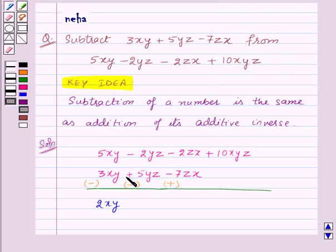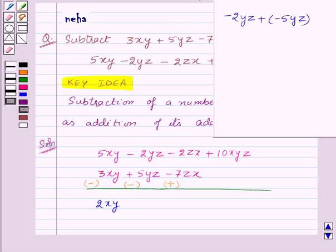Similarly, subtracting plus 5yz from minus 2yz is same as adding minus 5yz to minus 2yz. Minus 2yz plus minus 5yz is equal to minus 7yz. As minus 2 minus 5 is equal to minus 7, so here we will get minus 7yz.